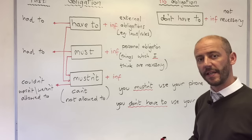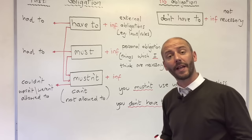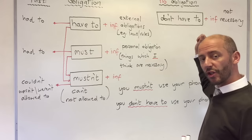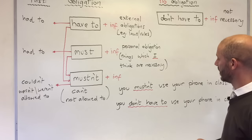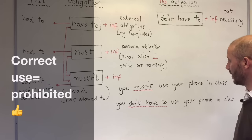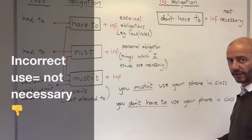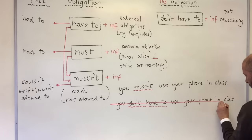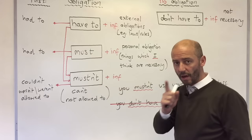Once again, the most common mistake students make is confusing mustn't with don't have to. For example: you mustn't use your phone in class does not mean the same as you don't have to use your phone in class — this is incorrect. Don't have to is no obligation; mustn't is obligation.